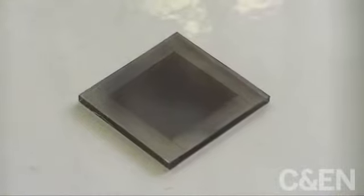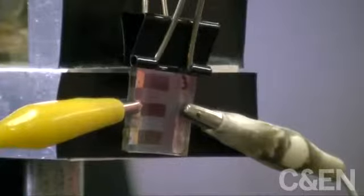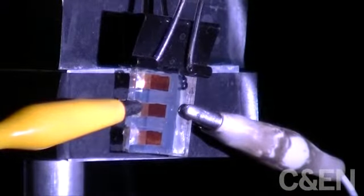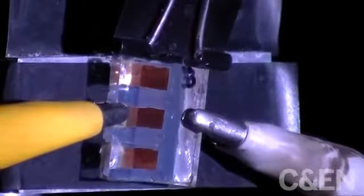After completing a few more steps, the device is ready for testing. Hook it up, turn on a solar simulator, such as a laboratory xenon lamp, and voila, this little device transforms light energy to electricity.